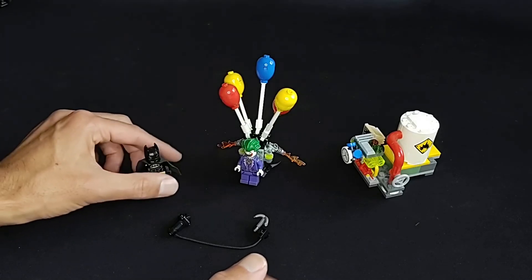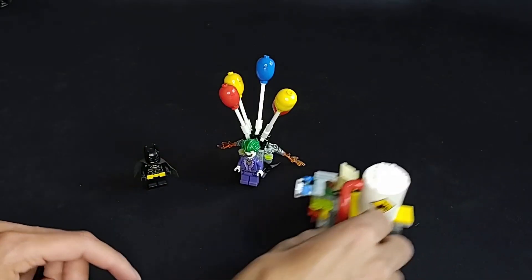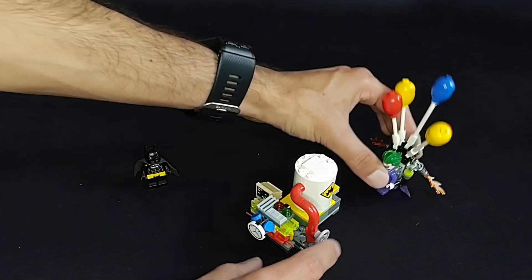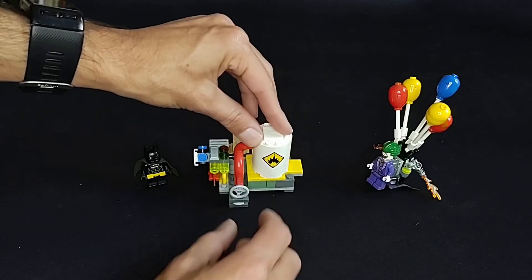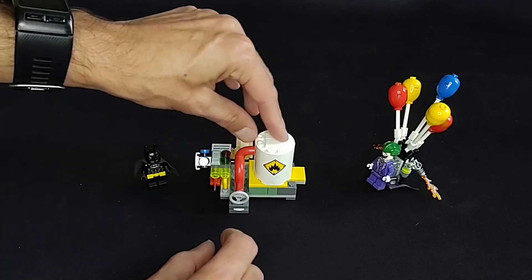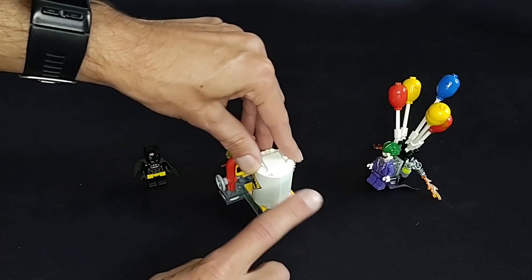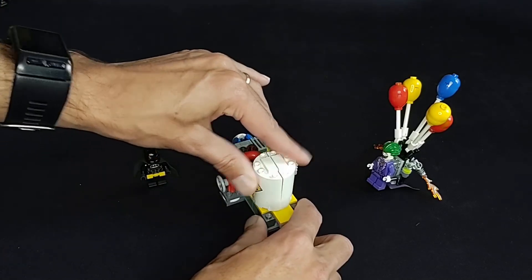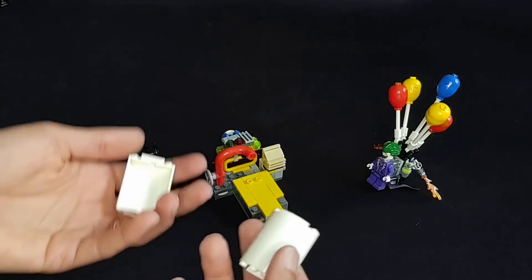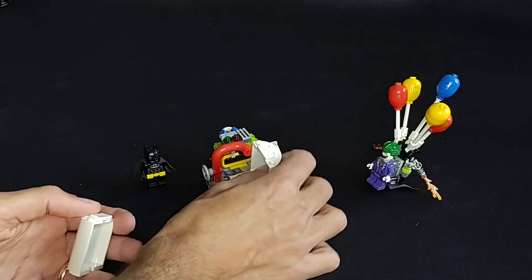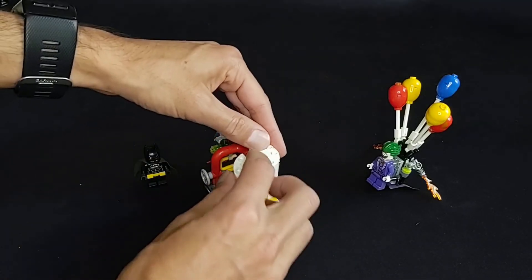And then the action feature comes, of course, from the bomb, which is heavily featured in that scene as well. You get some macaroni pieces to create this tubing. And the action feature is right here. And it explodes, which is simple, but functional. So I like that.